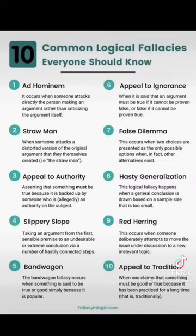Number eight: hasty generalization — this fallacy happens when a general conclusion is drawn based on a sample size that is too small. Number nine: red herring — this occurs when someone deliberately attempts to move the issue under discussion to a new, irrelevant topic.